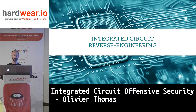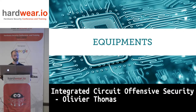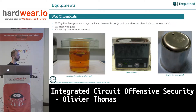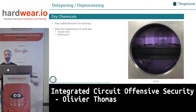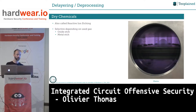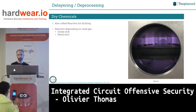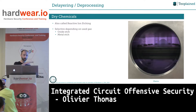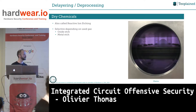I will start with the process of reverse engineering a chip. I will start with the equipment. We are using wet chemicals, as we saw with Chris, but when it comes to de-processing a chip I also use plasma etching. Wet chemicals — as we heard this morning — if you try to de-process a chip and the tech node is a bit small, it's not going to work very well and the surface will be uneven.